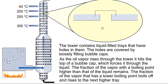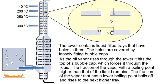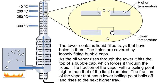As the oil vapor rises through the tower, it hits the top of a bubble cap, which forces it through the liquid. The fraction of the vapor with a boiling point higher than that of the liquid remains. The fraction of the vapor that has a lower boiling point boils off and rises to the next higher tray.